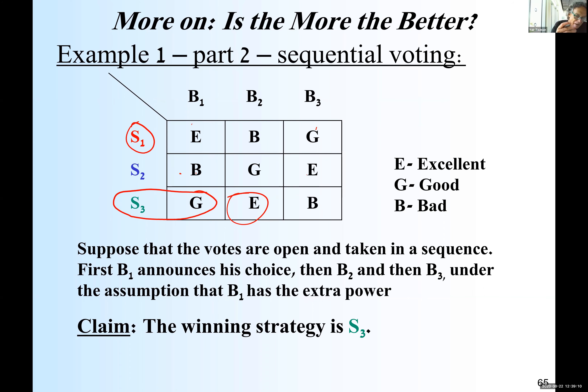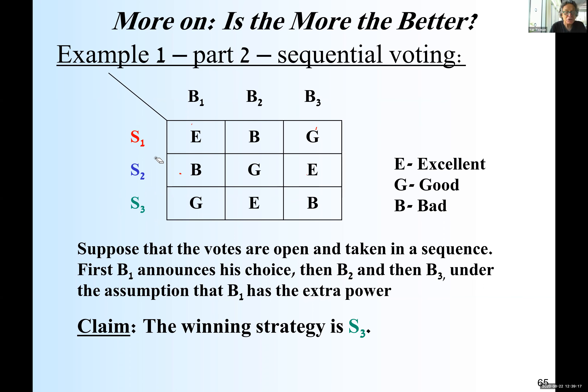Now we can take another order, but first let's read what we have, just to make sure. It's not easy — you have to think strategically, like chess: if I do that, what will he do, then what will she do.